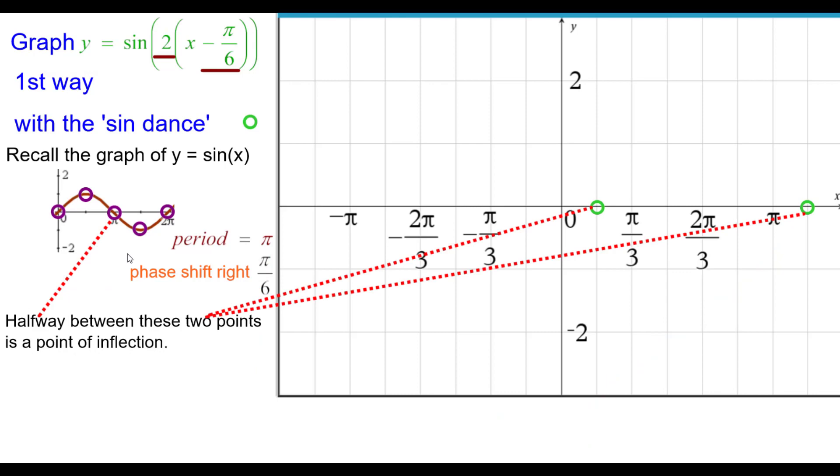Halfway between these two points, beginning and end, is another point of inflection. And this is going to be at 2 pi over 3, 0. You can see that halfway between there.